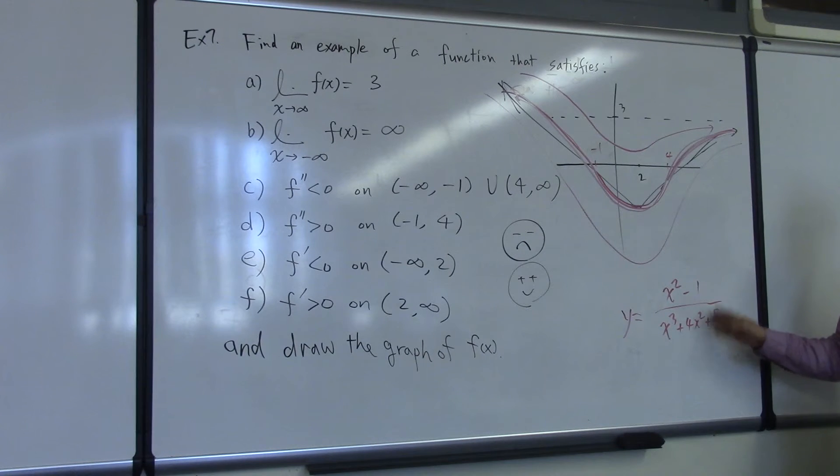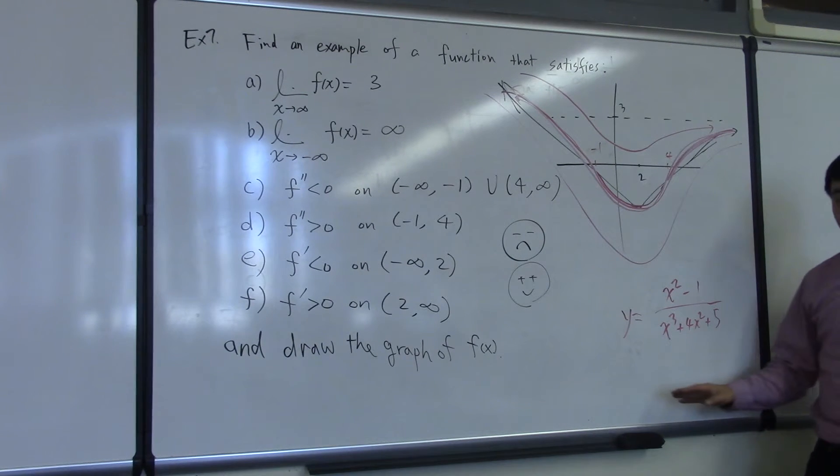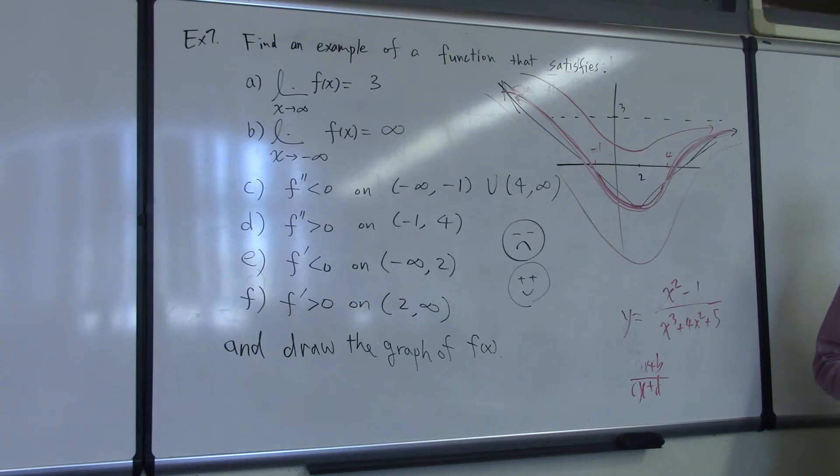The reason that you were told that you can't cross the horizontal asymptote is that's only true when you have ax plus b over cx plus d type. In that case, you're not allowed to pass through the horizontal asymptote. Now, for this graph, you have to pass through the horizontal asymptote because it's going to infinity.